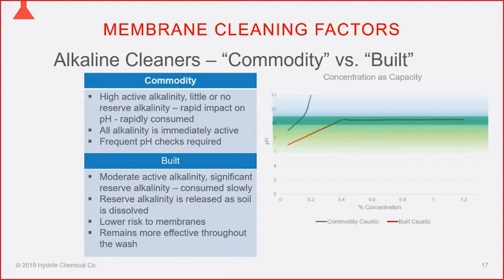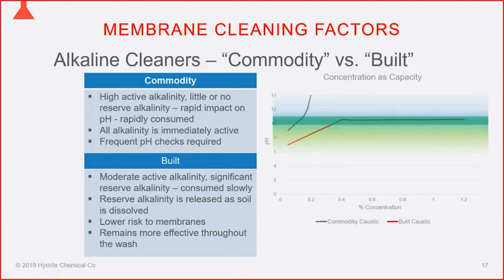Very diligent customers with highly trained staff have successfully used 50% caustic to clean membranes, but as soon as you get a new operator who doesn't know how to maintain pH, or they get busy doing other things, cleaning can be compromised. A built caustic contains the commodity caustic as one ingredient, but a portion of that caustic has been neutralized by an acidic component — for instance, potassium carbonate (potassium hydroxide neutralized with CO₂), or sodium gluconate (caustic with gluconic acid added). These partially neutralized products don't cause pH to spike as rapidly.